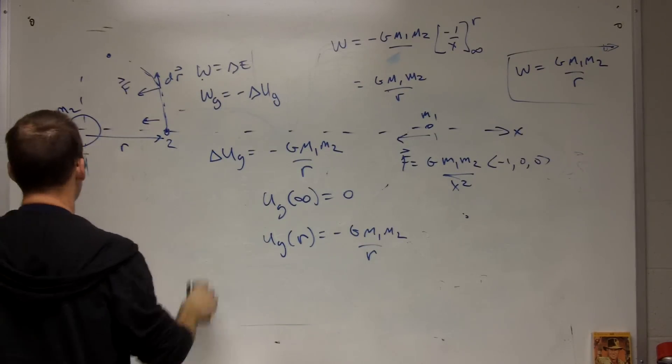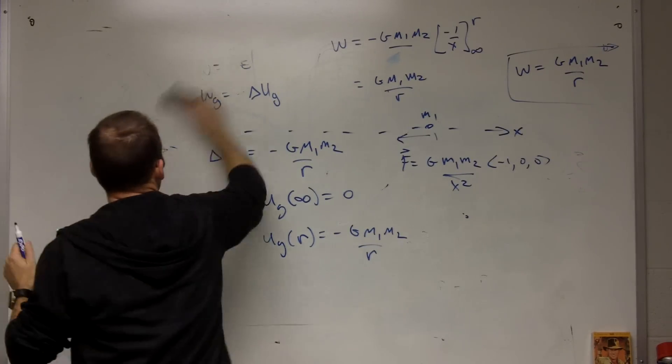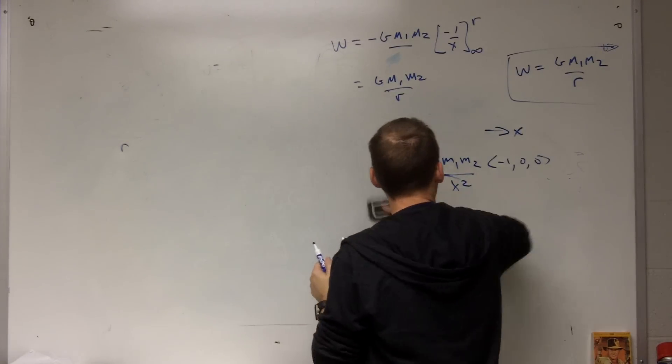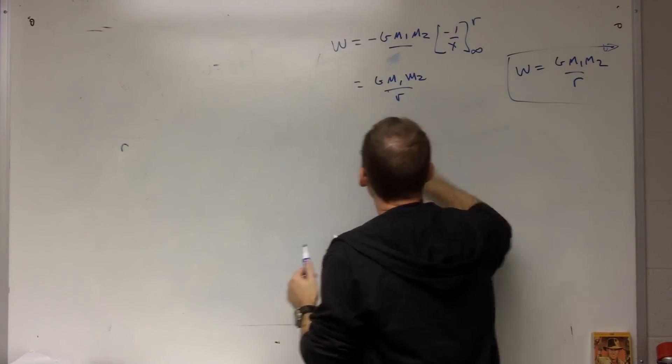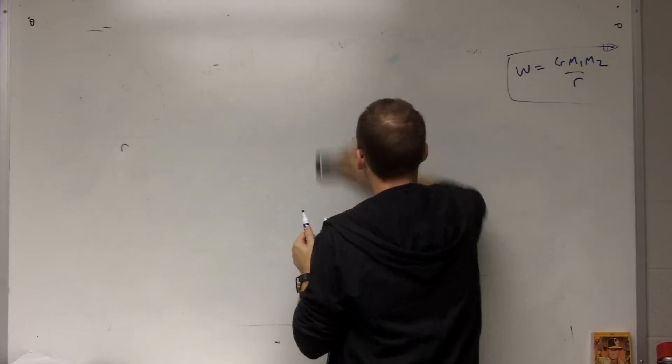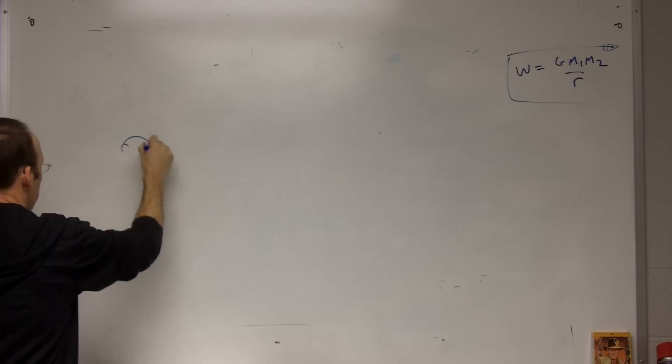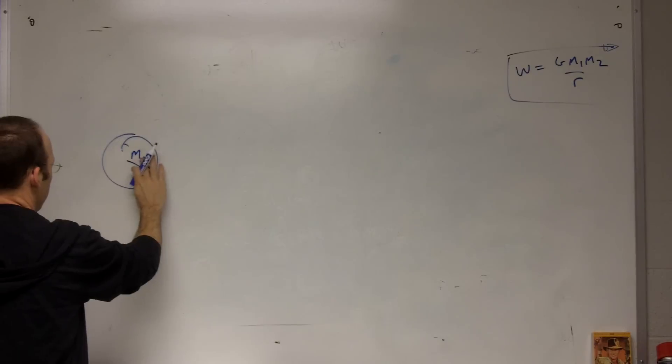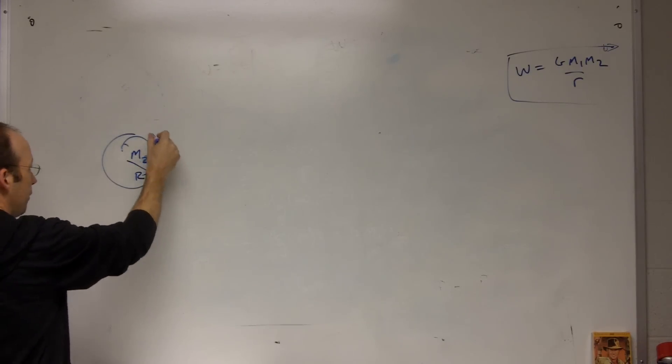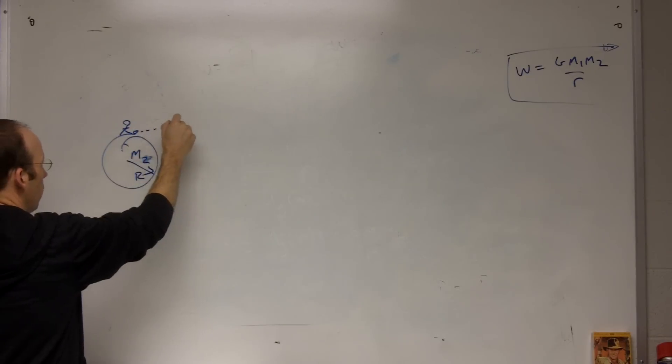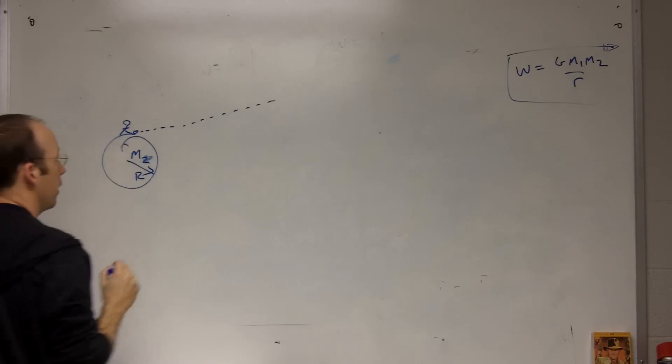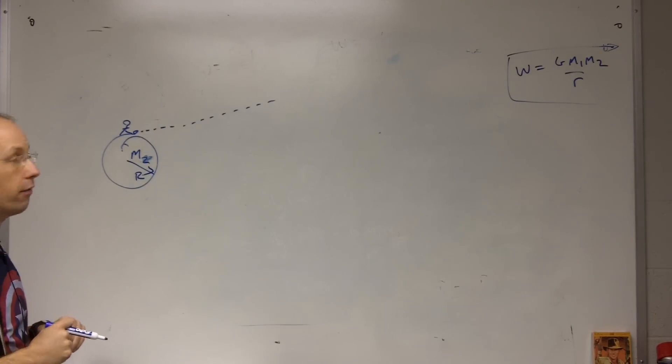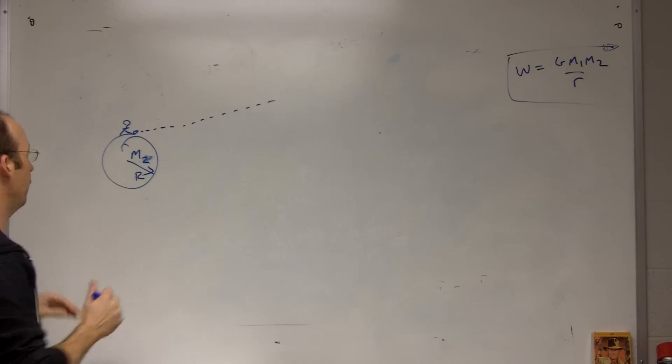Okay, one quick problem. Back to the moon. Okay, I'm on my moon. And it has a radius of capital R and a mass of mm. Now it's called m2 still. And I'm standing here, and I want to hit a golf ball so that it goes and never comes back. Ever, never, never, ever. How fast would I have to hit it?